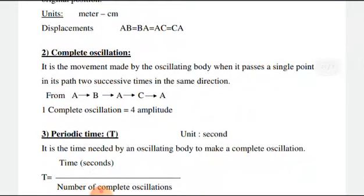Secondly, the complete oscillation. It is movement made by the oscillatory body when it passes a single point in its path two successive times in the same direction.